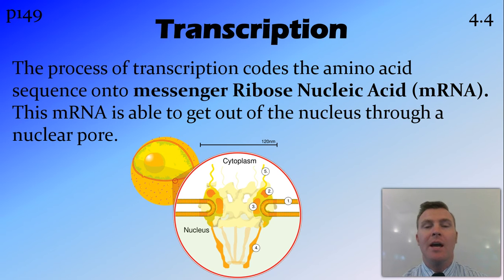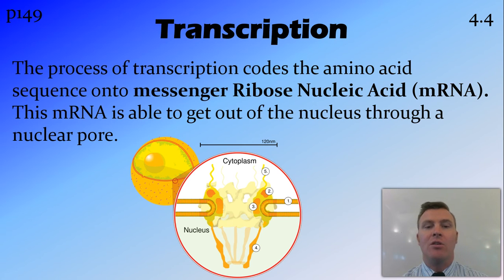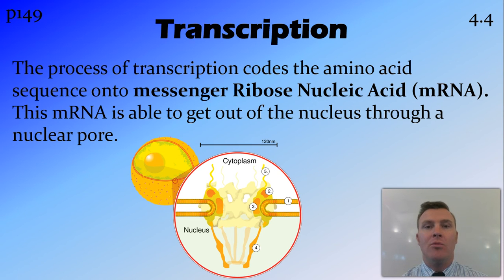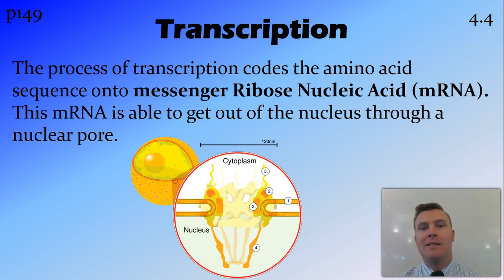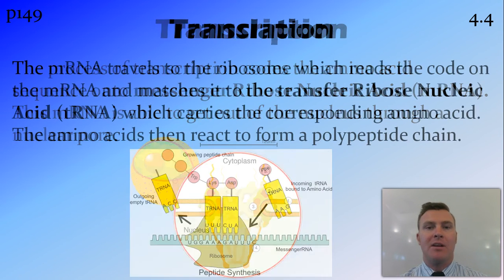So firstly, transcription is the process of coding the amino acid sequence — so the amino acids that need to be made — from the DNA onto a strand of what is called messenger ribonucleic acid, or mRNA. This mRNA is very small, and it moves out of the nucleus through a very small nuclear pore, which is a hole in the nuclear membrane, out into the cytoplasm or rough endoplasmic reticulum.